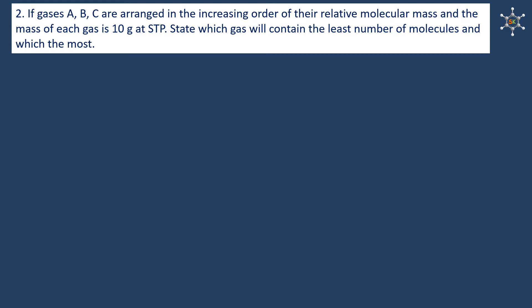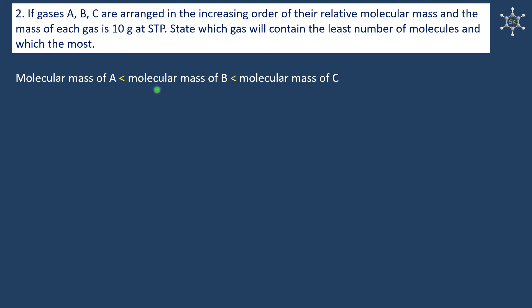If gases A, B, and C are arranged in increasing order of their relative molecular mass and the mass of each gas is 10 grams at STP, which gas contains the least number of molecules and which the most? It is given that molecular mass of A is less than B, which is less than C. We know moles equals given mass divided by molar mass.